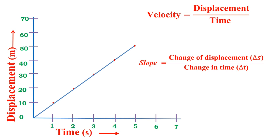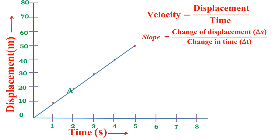Now let's find this out. We have to select any two points on this graph. Let's say point A is selected and another point B is selected. It's not necessarily those exact points — you can select other points as well. Any two points can be selected from the graph.